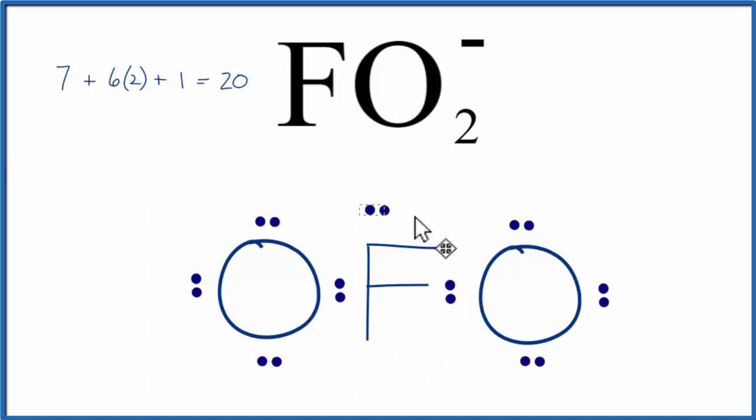So we can add these 2 pairs on the fluorine, we've now used 20 valence electrons, and the octet on the fluorine is complete as well.